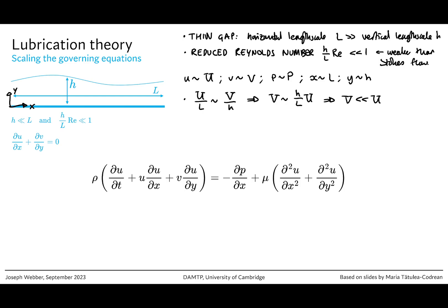Flow is predominantly horizontal, which is quite handy because it allows us to set a time scale. Most of the flow is parallel to the gap, so our horizontal velocity scales like length over the dominant time scale. Time in this problem scales like L over U. Now let's scale the x-component of the momentum equation. The term du/dt scales like u squared over L, and similarly the convective terms on the left-hand side all scale like u squared over L, giving a left-hand side of rho u squared over L.